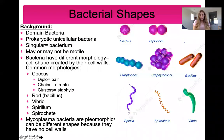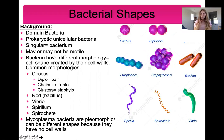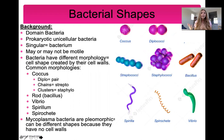Bacteria are prokaryotes and unicellular organisms, meaning all bacteria are made up of one cell. Bacteria are part of the domain Bacteria. Remember, there are three domains of life: domain Bacteria, domain Archaea, and domain Eukarya. The group of bacteria falls under domain Bacteria.